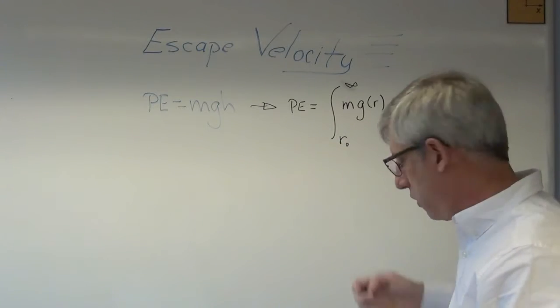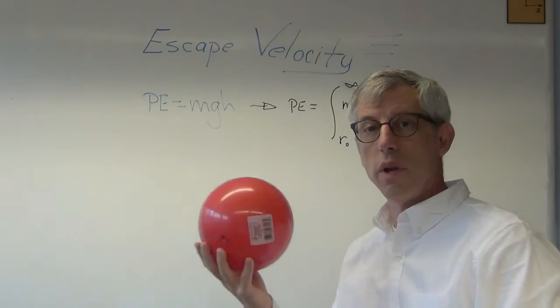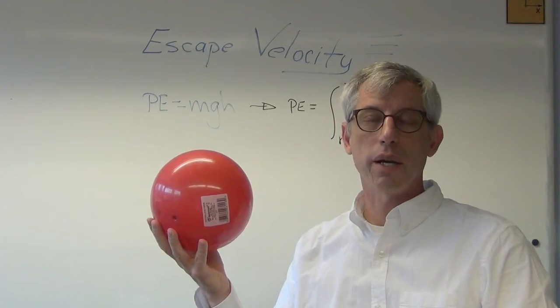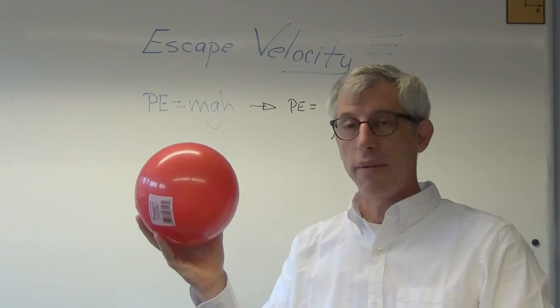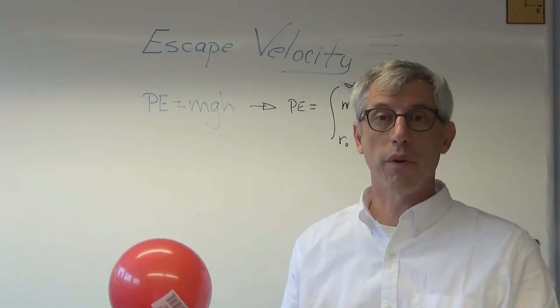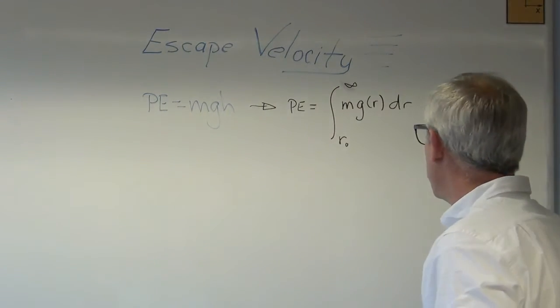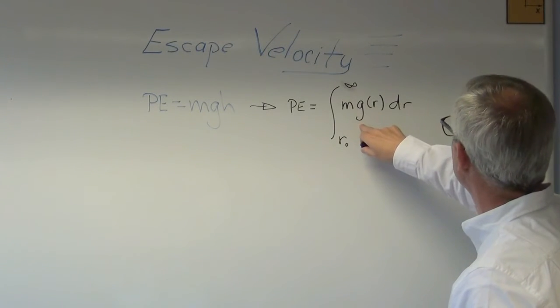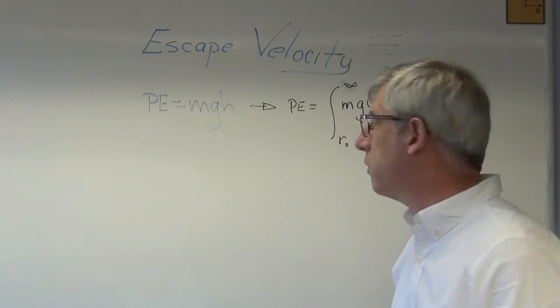What's r₀? Well, that's where you're starting. If this were the earth, r₀ would be the radius of the earth. How much kinetic energy do you have to have at the surface of the earth to go away forever? That's escape velocity. So this isn't too hard. What I need to do, though, is I need an expression for acceleration of gravity.